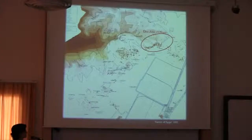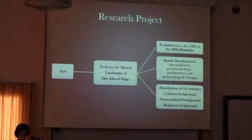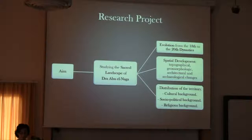The aim of this project is to study the sacred landscape of the southern area and the beginning of the northern area of Drabu el-Naga, and its evolution from the 18th to the 20th dynasties. The project is focused on the spatial development of these areas, where the analysis of the topographical elements together with the geomorphological, architectural, and archaeological changes that Drabu el-Naga encountered throughout the New Kingdom will help explain how the distribution of the territory took place. GIS studies will investigate the cultural, sociopolitical, and religious background, which also played an important role in the distribution of the territory as the cornerstone linking them all.